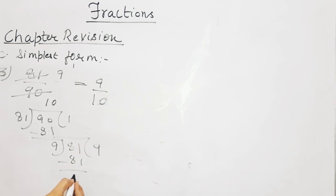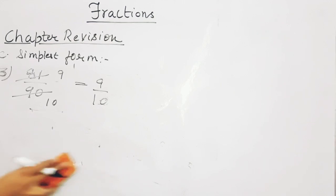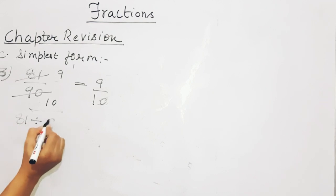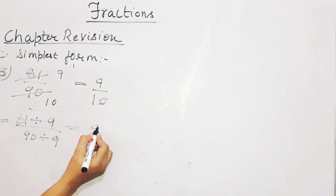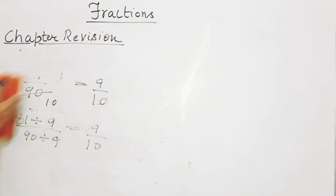The HCF of 90 and 81 is 9. Divide both numerator and denominator by 9 — the answer is 9 upon 10. Option D is your homework; you will do it in your homework copy. Now coming to the next exercise, that is D exercise: solve the following.